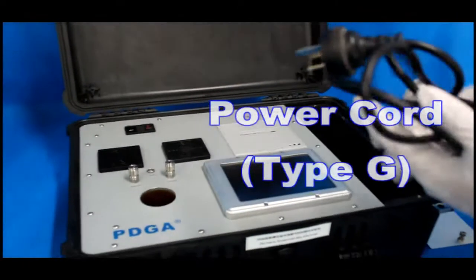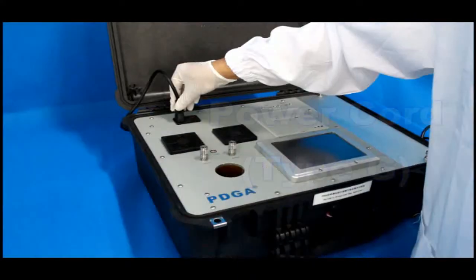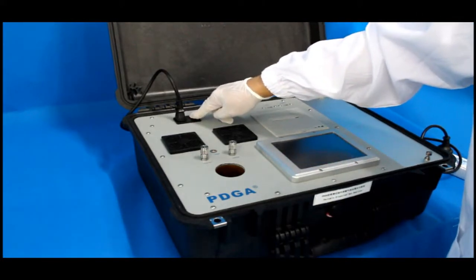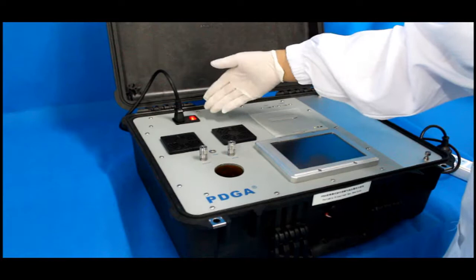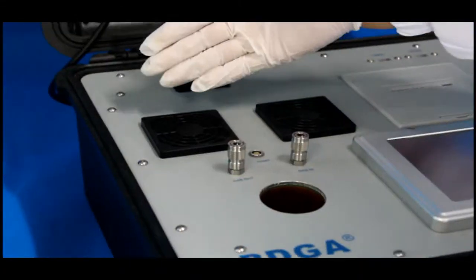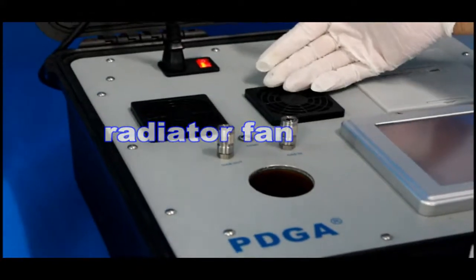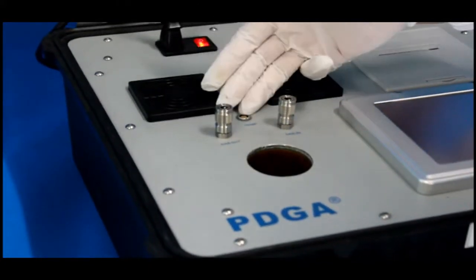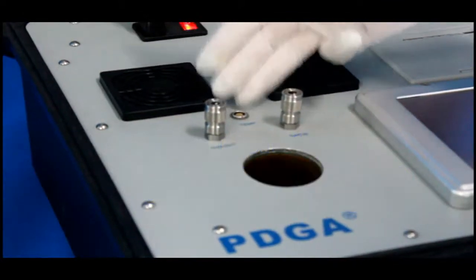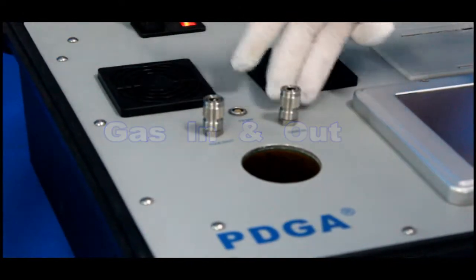We use Type-G power cord. The power switch is just near the power socket. We have two radiator fans near the temperature data transmission cable interface. And here is the interface for gas in and out.